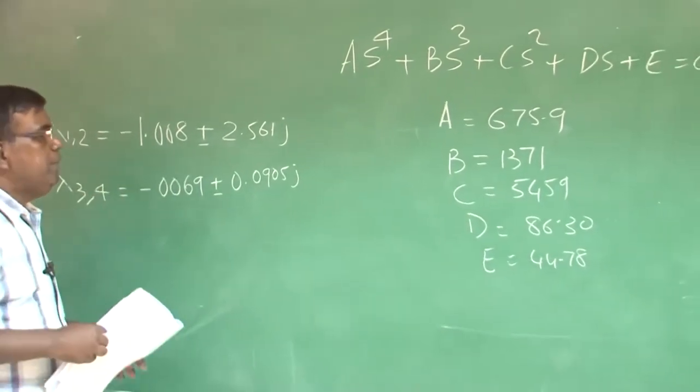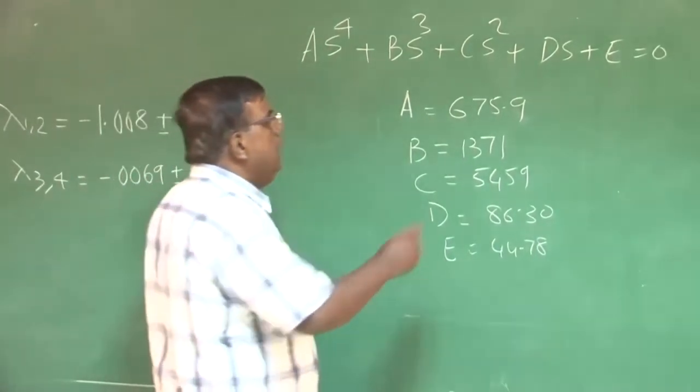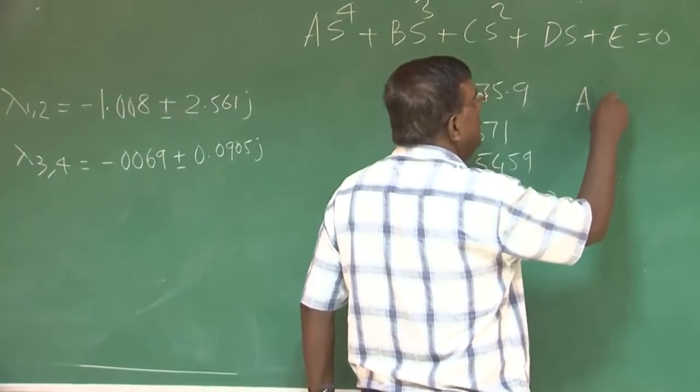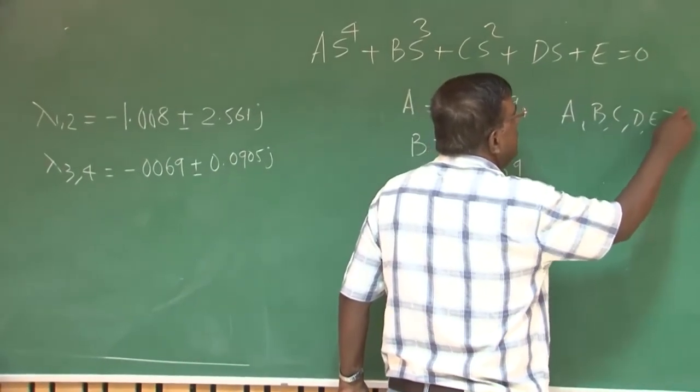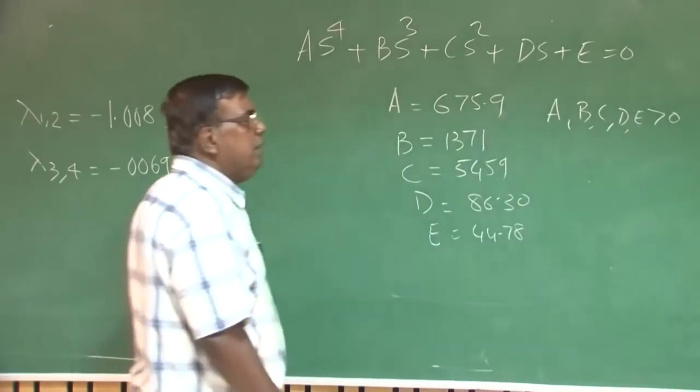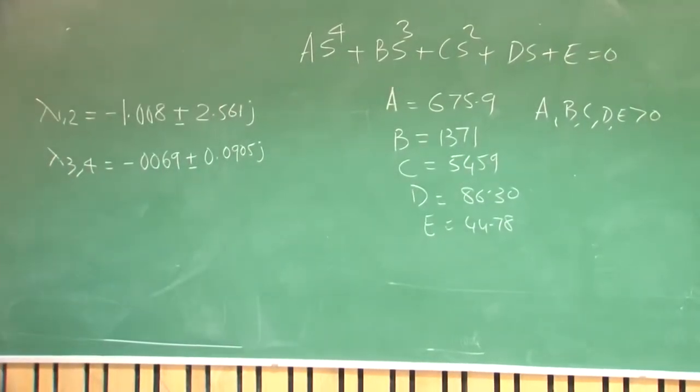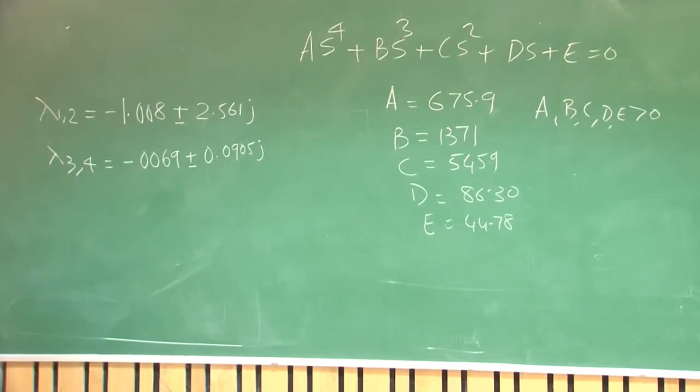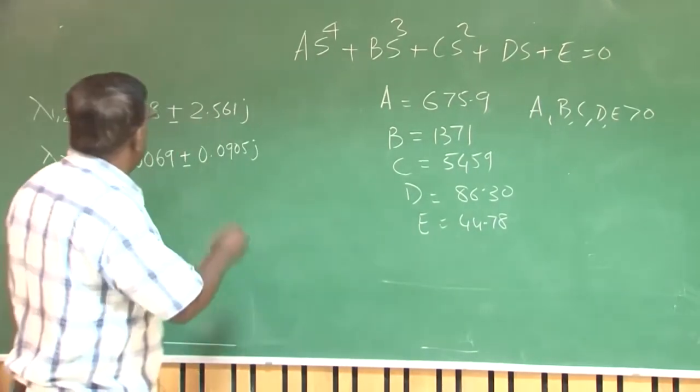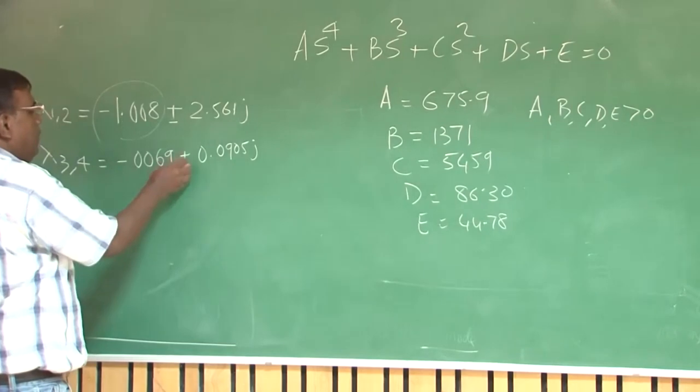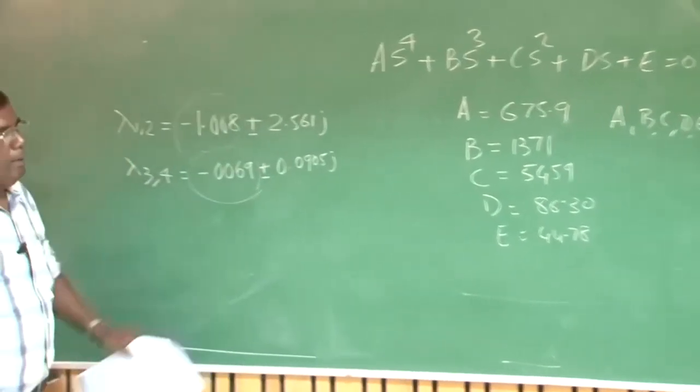Now let us again come back here, we are expecting 4 roots, this is 2 plus 2, 4 roots are there. Now we have seen A, B, C, D, E greater than 0 and also second condition is also satisfied. So it will be having roots which will lead to dynamic stability, no instability. That means no real part of this root will be positive that comes from those conditions.